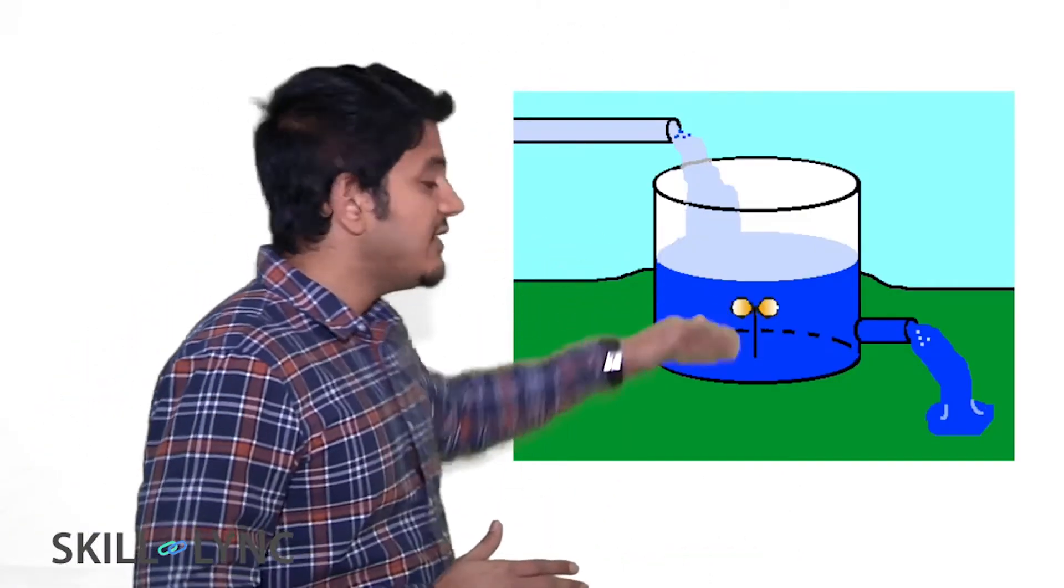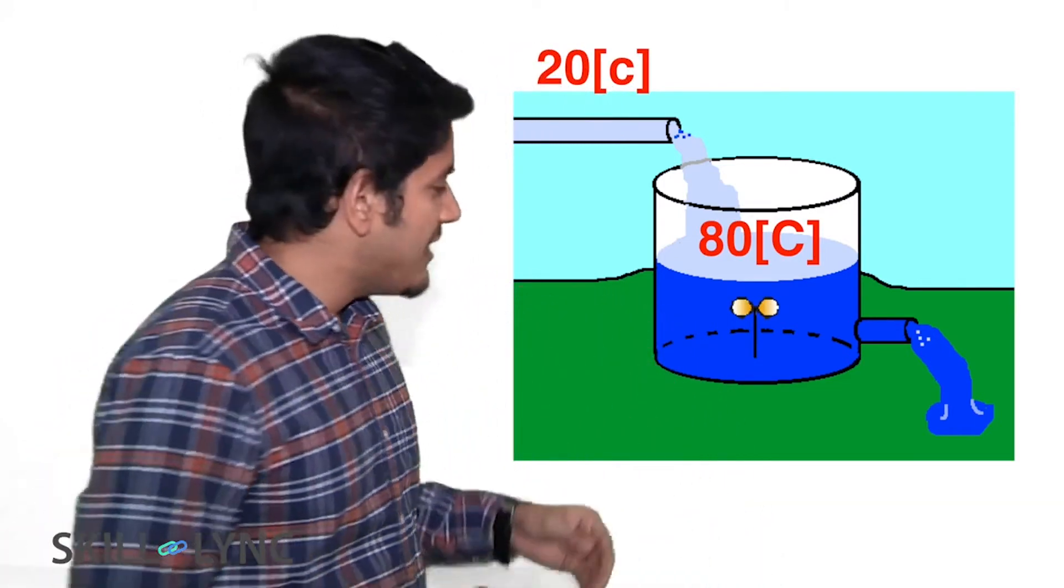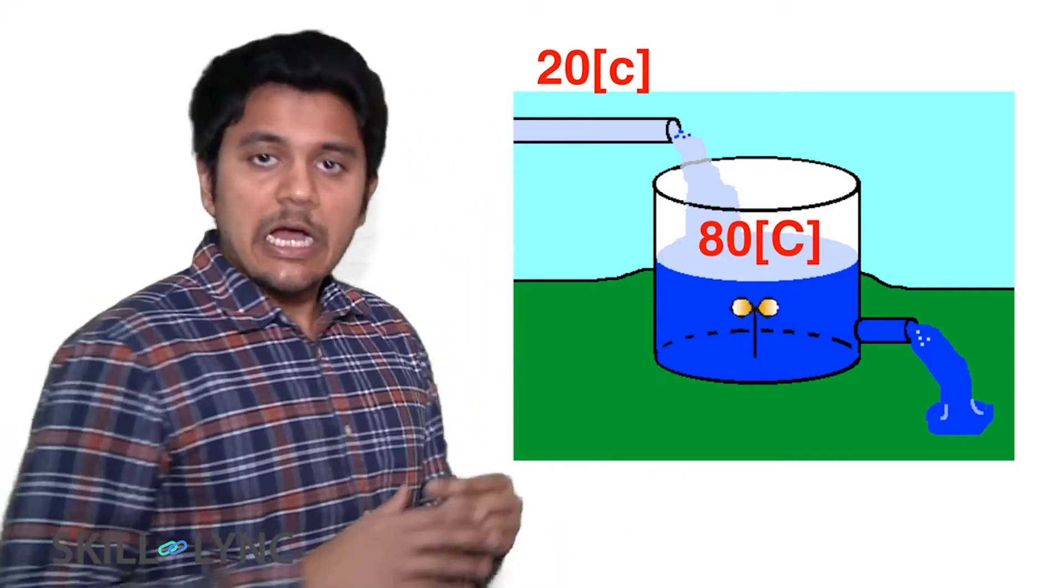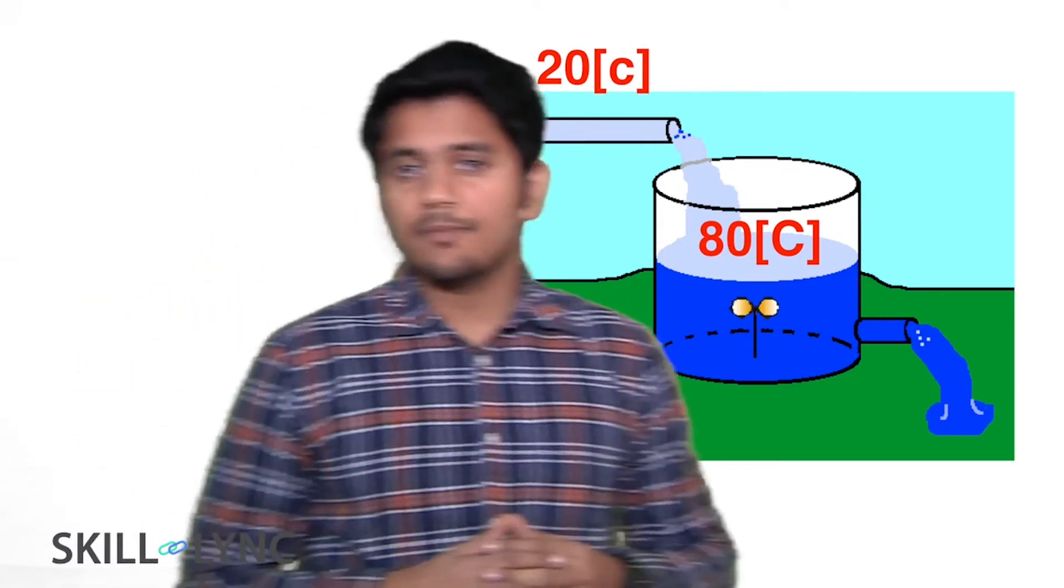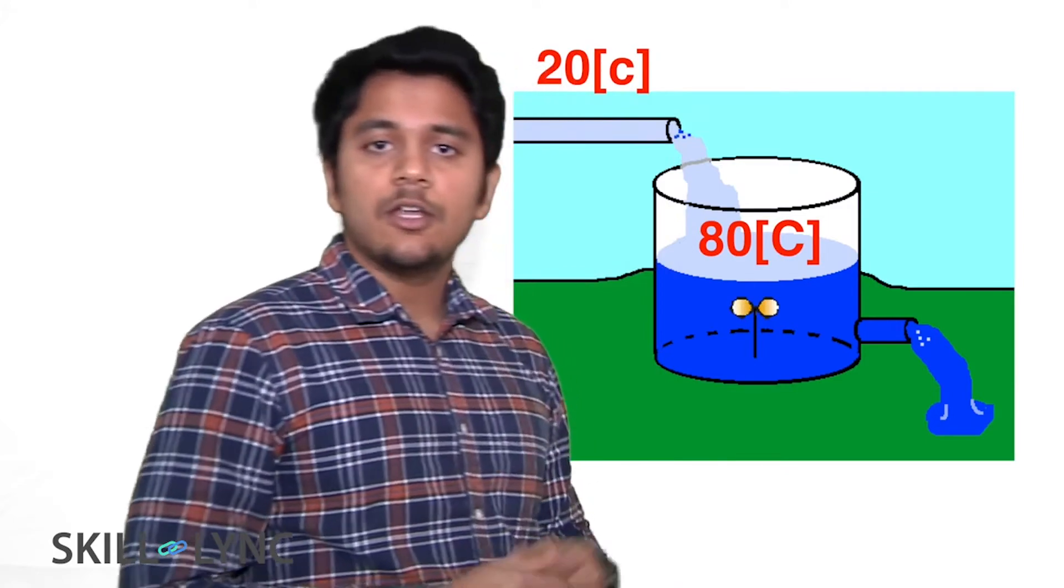Now in the same example let us consider that the water in the tank is at a temperature of 80 degrees celsius and the water that's going into the tank is at a temperature of 20 degrees celsius. Now can this mass balance equation tell us how the temperature in the tank is going to change with time? No, absolutely not. This is because we need one more additional equation to get the temperature information. This equation is referred to as the energy equation. That being said, this brings us to an important concept in modeling: that is, to get more information from a system we need to be solving more equations which makes the model more complex.